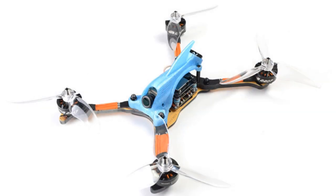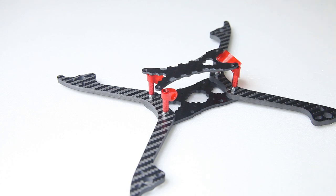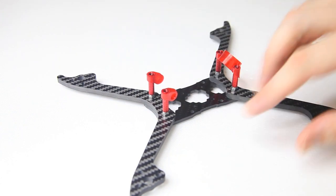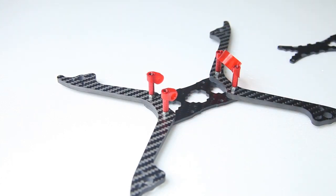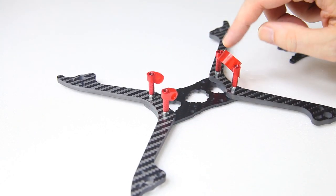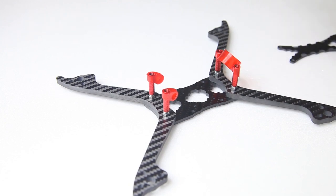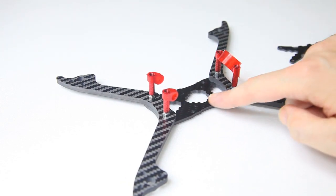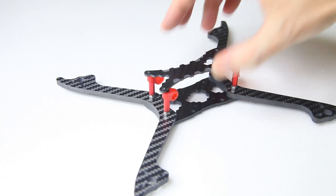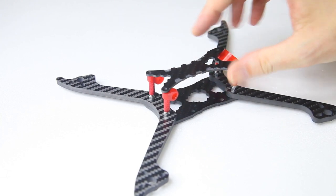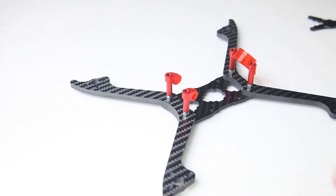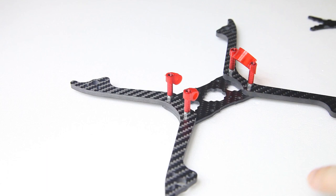some people might prefer a TPU printed pod instead of a top brace like so. It'll protect your electronics and it might be more aerodynamic. So some people prefer a TPU printed pod, and for that to be an option you need to have a stiff frame without the top plate.